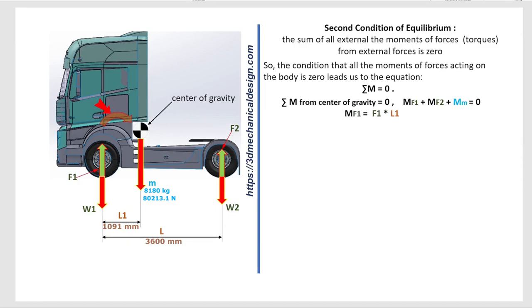Mf1 equals F1 times L1. Mf2 equals F2 times L minus L1. Mm equals M times 0 equals 0. F1 times L1 equals F2 times L minus L1.